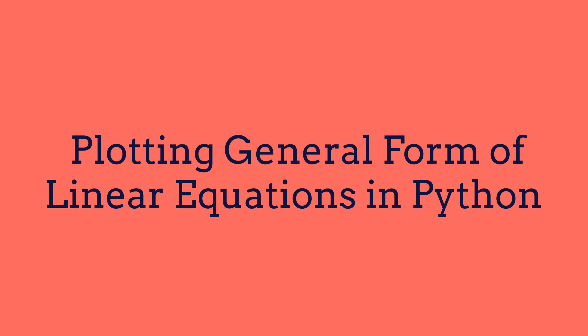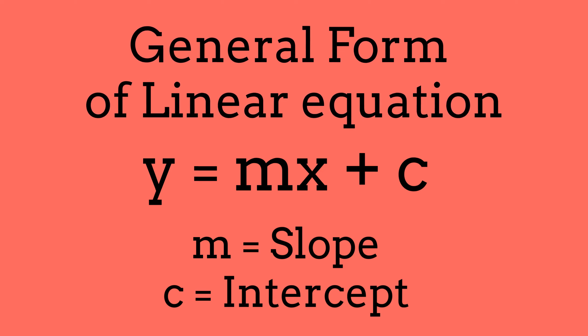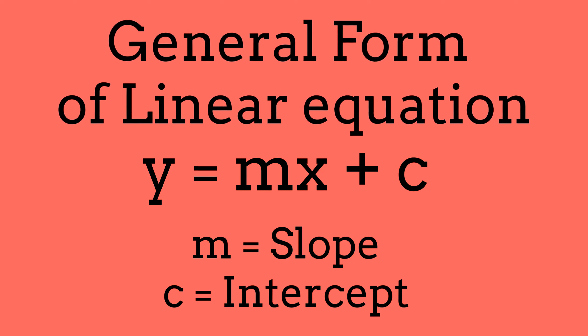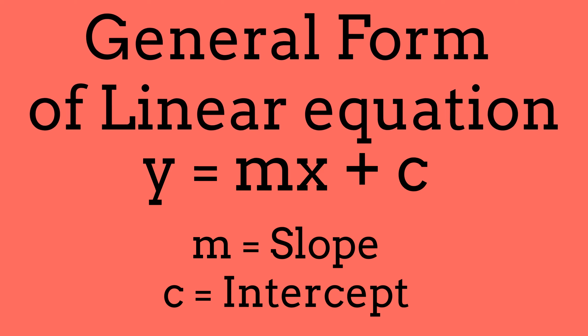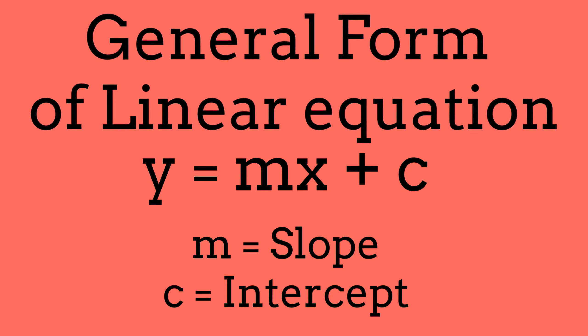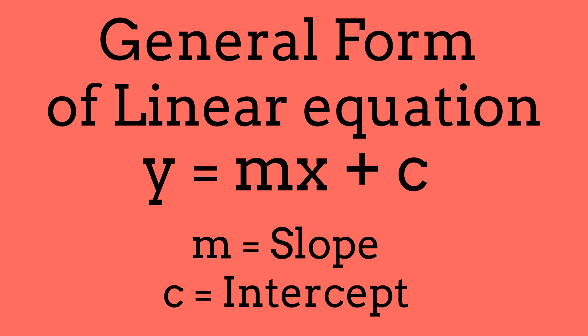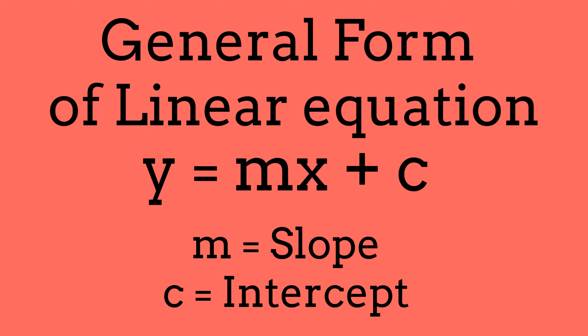In this video, I'll be showing you guys how to plot the general form of linear equations in Python. The general form of a linear equation we will be going over today is y equals to mx plus c. In this linear equation, m is equal to the slope and c is equal to the intercept. For this video, we'll consider that c will equal to zero, so our actual equation will look like y equals to mx.